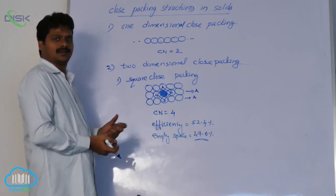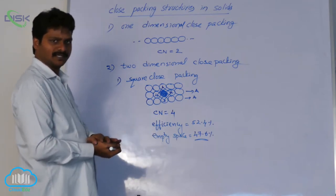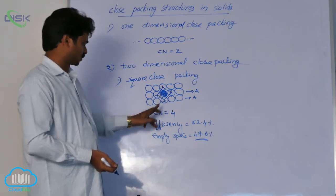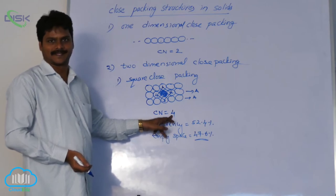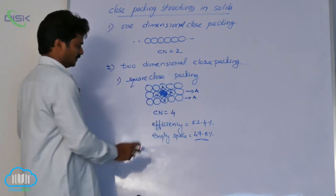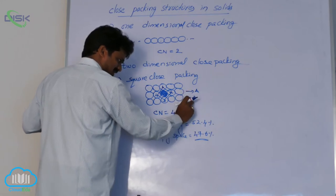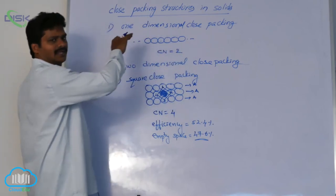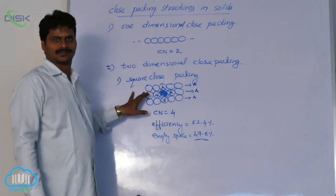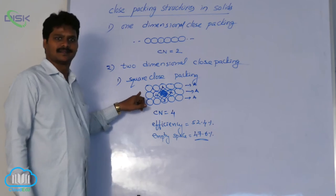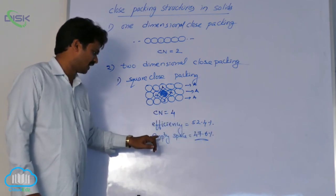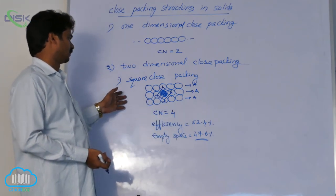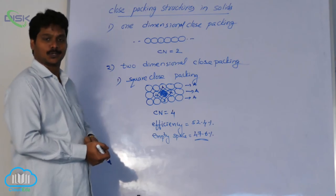The main points of square close packing: each sphere is in contact with four other spheres, giving coordination number four. All rows are identical — if the first row is A, the second row is also A, and so on, giving an AAA arrangement. The occupied volume is 52.4% and empty space is 47.6%. This is about square close packing in two dimensions.